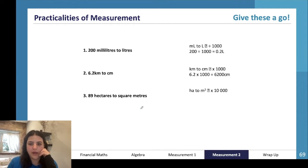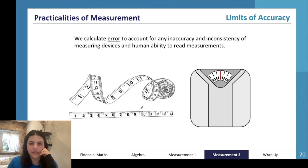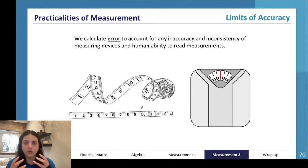All right, so this is something that confuses a lot of students - something called limits of accuracy and absolute error. What we do in practicalities of measurement is kind of provide for the fact that humans aren't infallible and neither are measuring devices. So scales, measuring tapes, the human eye - they're all inaccurate sometimes and inconsistent.